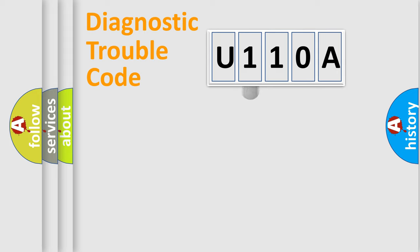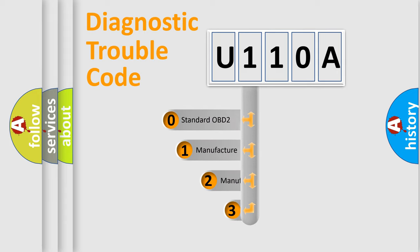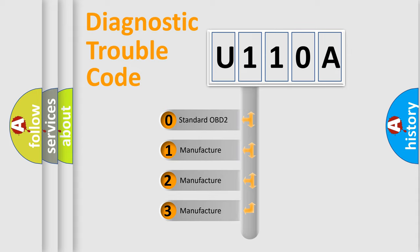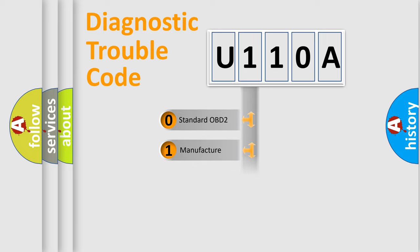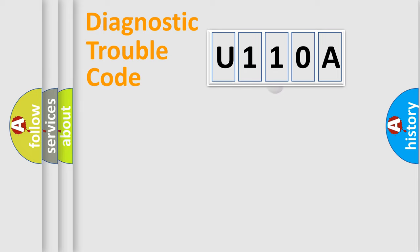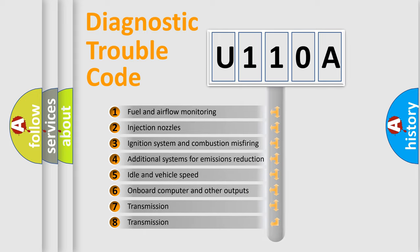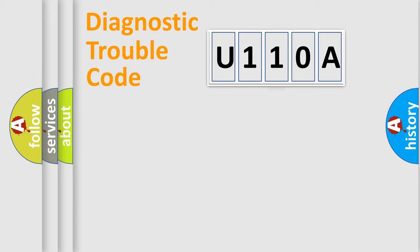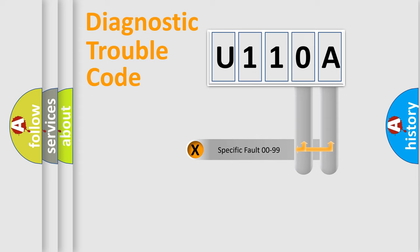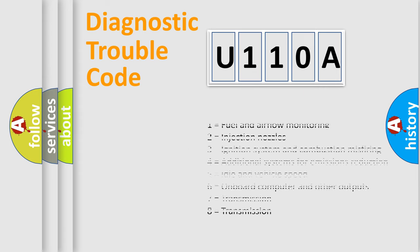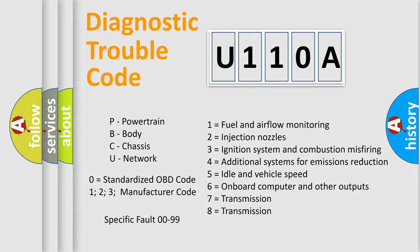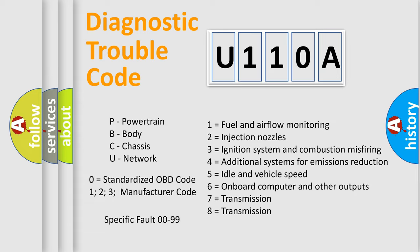This distribution is defined in the first character of the code. If the second character is expressed as zero, it is a standardized error. In the case of numbers 1, 2, or 3, it is a more specific expression of a car-specific error. The third character specifies a subset of errors. This distribution is valid only for the standardized DTC code, and only the last two characters define the specific fault of the group. This division is valid only if the second character is expressed by the number zero.